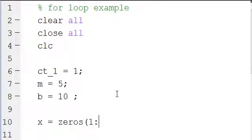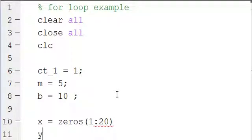1 comma 20, and y equals zeros, 1 comma 20. Sorry, not 1 colon 20—that would give you a 20 dimensional array, which would be ridiculous.